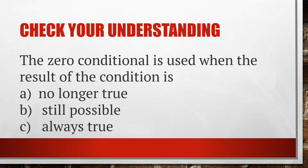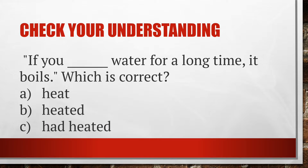Check your understanding. The zero conditional is used when the result of the condition is: no longer true, still possible, or always true? — Yes, always true. If you heat water for a long time, it boils. Which verb form is correct: heat, heated, or had heated? — Yes, 'heat'. If you heat water for a long time, it boils.